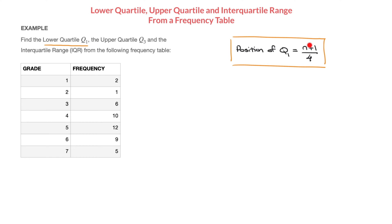The n inside this formula refers to the number of values of data we have. Here the data is summarized in a frequency table, so the total number of grades obtained will equal the sum of all the frequencies. We add a cell at the bottom of our table where we write n equals the sum of all frequencies: 2 + 1 = 3, + 6 = 9, + 10 = 19, + 12 = 31, + 9 = 40, + 5 = 45. So n = 45, meaning 45 students sat this exam.